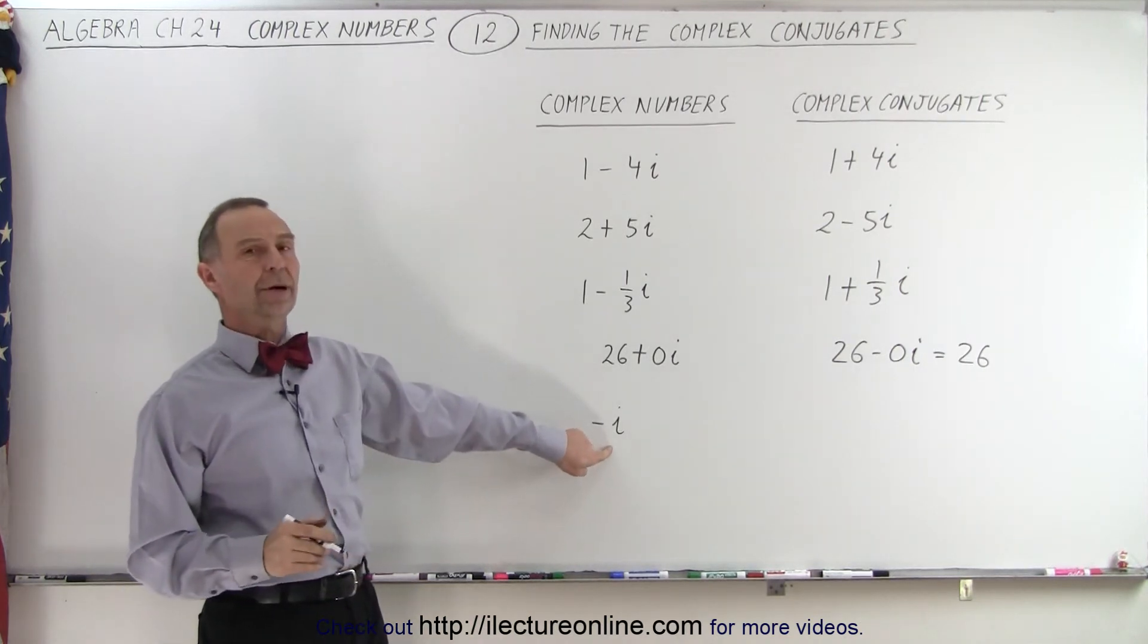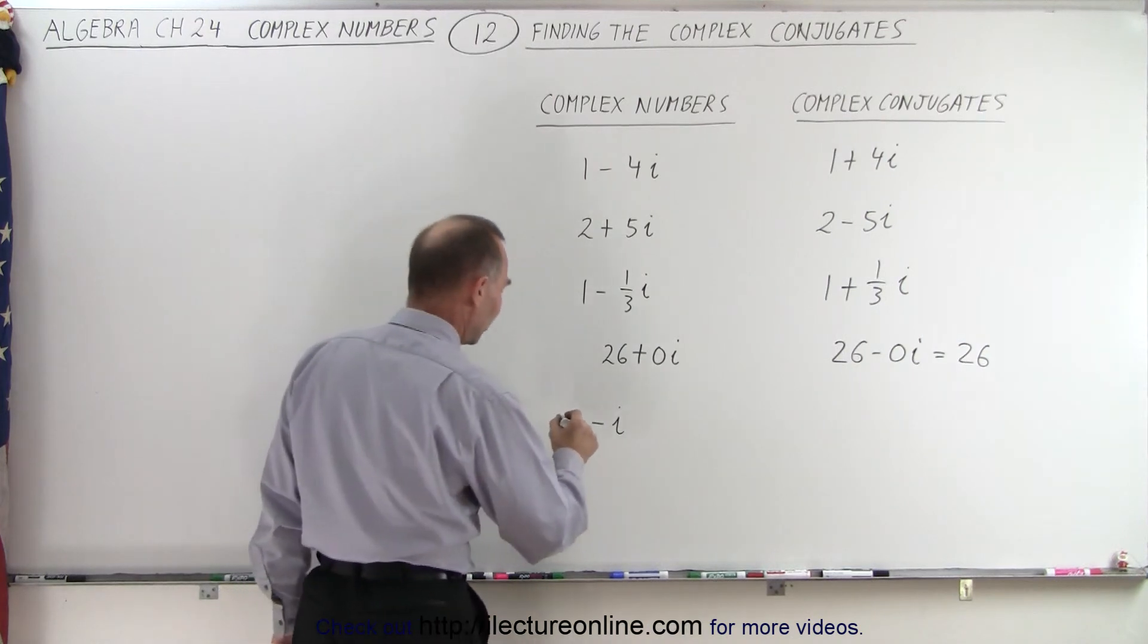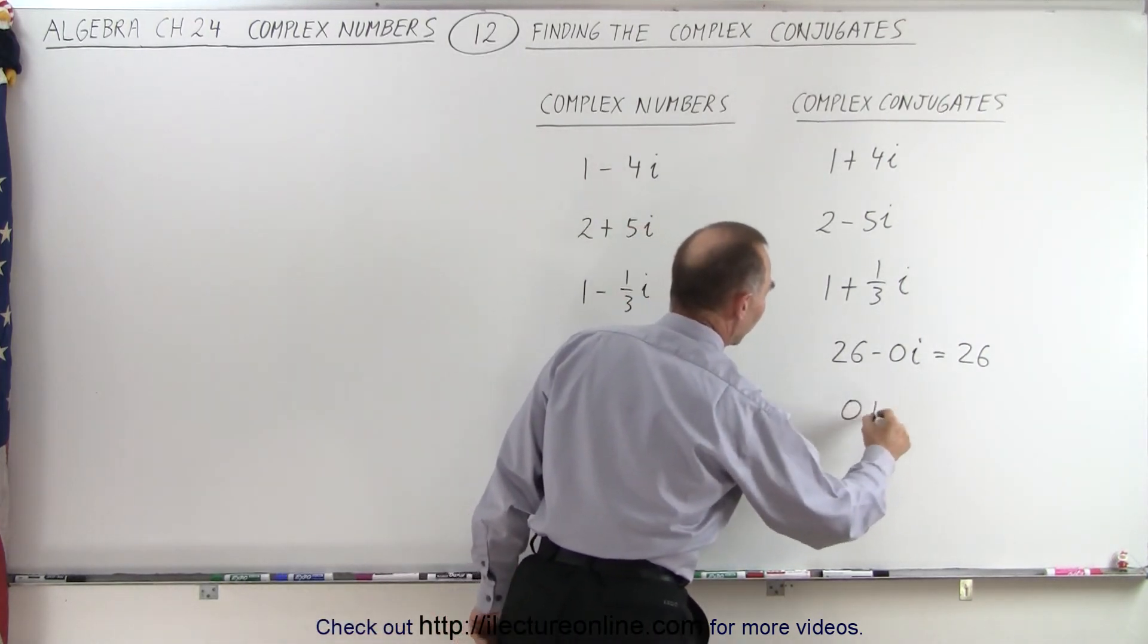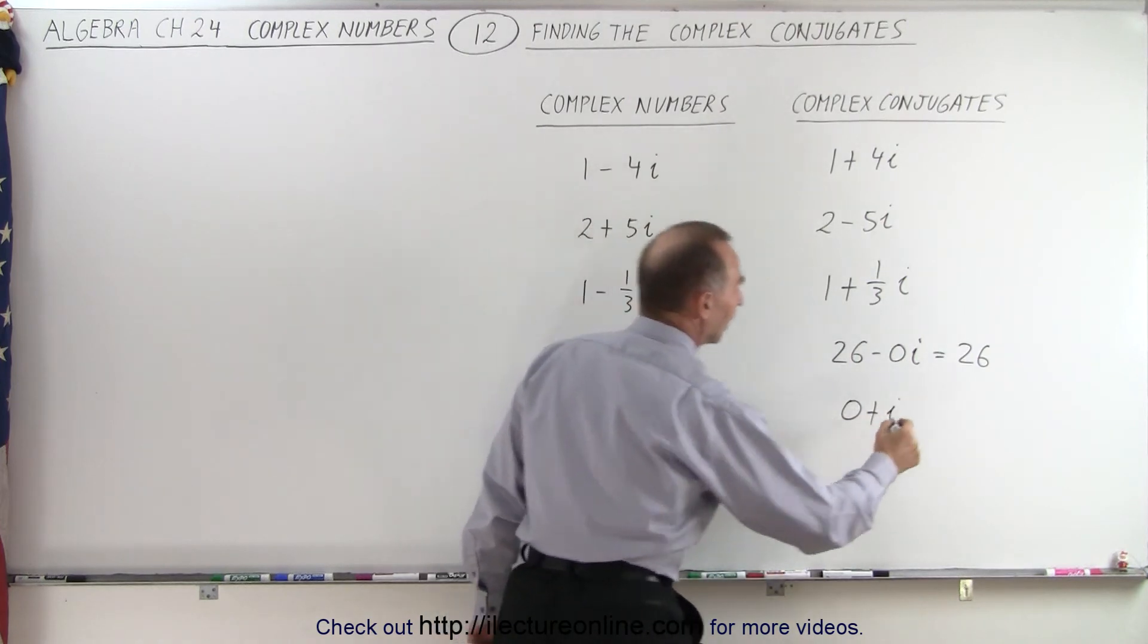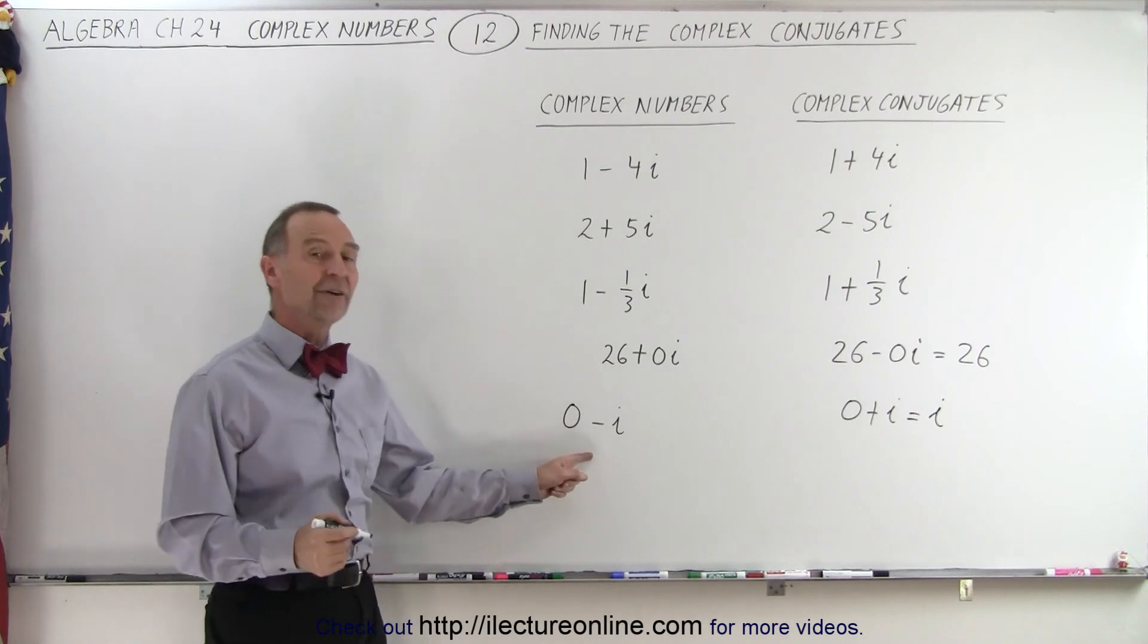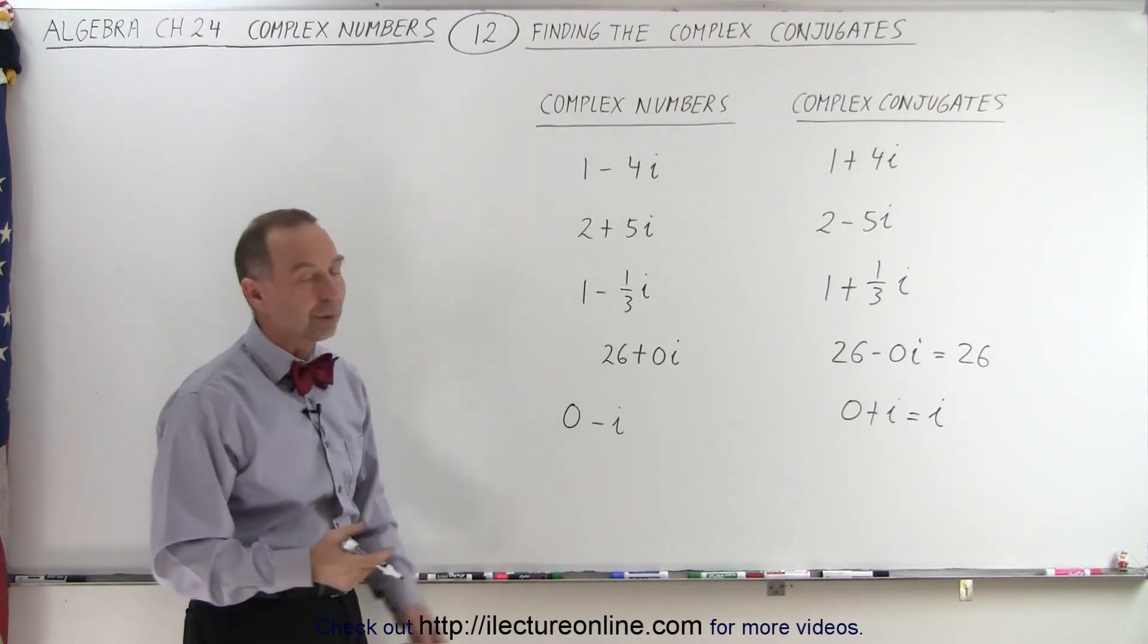And what if we have an imaginary part but no real part? Well, then we could say this is the same as 0 minus i. And so that becomes 0 plus i, or simply, this is equal to i. So if we have negative i as the imaginary number, the complex conjugate of that is plus i.